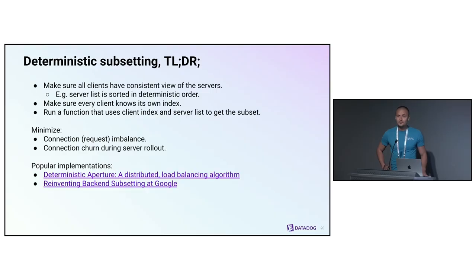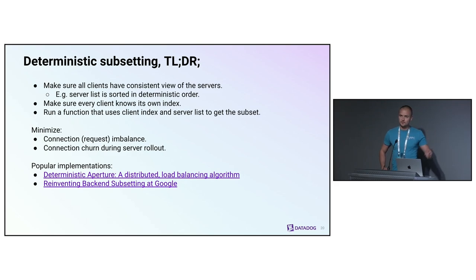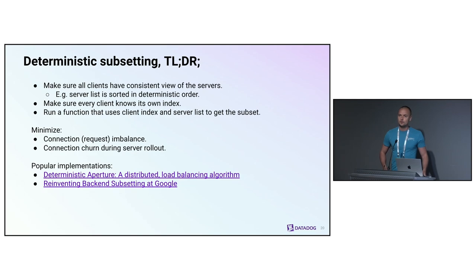That's a great question. Getting back to my slide on deterministic subsetting — the second paper is actually the one mentioning Rocksteady subsetting. This is one example of deterministic subsetting. We actually implemented a proof of concept for it, but the outcome was that it's not something we can add to gRPC by default, for the reasons I explained — it requires coordination that gRPC's model doesn't support in that way.